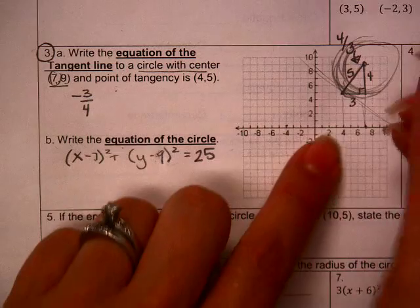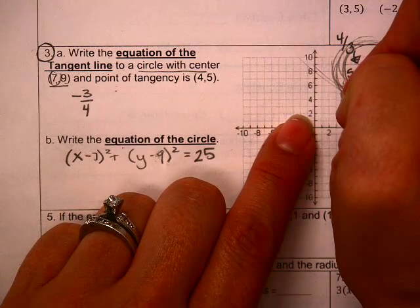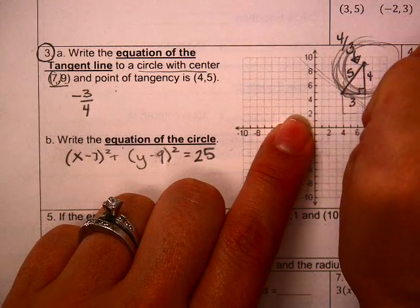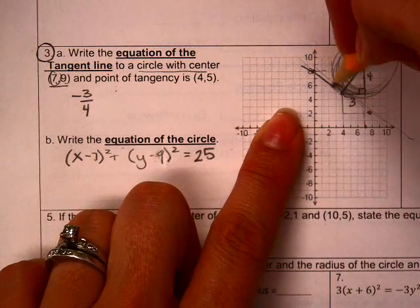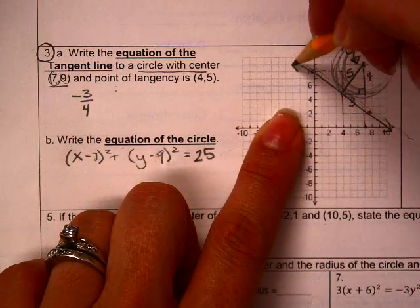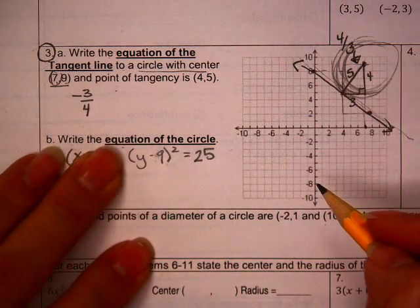Remember, perpendicular is the negative reciprocal. So if I do that, that is my tangent line.